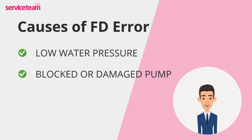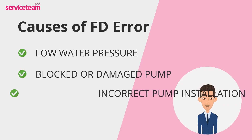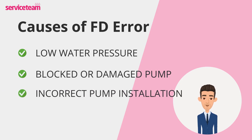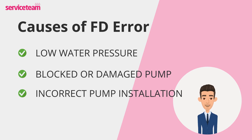This issue may be caused by heating sludge buildup or wear and tear on the pump's shaft or bearings over time. Another cause is incorrect pump installation. If the pump wasn't set up correctly — if it's not properly aligned or fitted — it can impact water flow and trigger the FD code too.